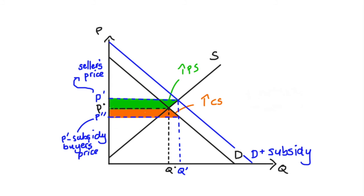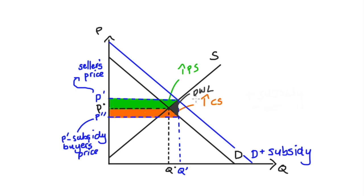If we put these two surplus increases next to each other, we can see they almost make up that rectangle I identified as the cost to the government. The government has injected all of this money into the industry: some has been transferred to consumers as consumer surplus, some to producers, but there is a little bit left that has been lost to the system. This is our deadweight loss — I'm colouring it in black here. We had an increase in producer surplus and consumer surplus, but the cost to the government on net exceeded both of these increases. That part of the government's injection not passed on to producers or consumers is our deadweight loss.